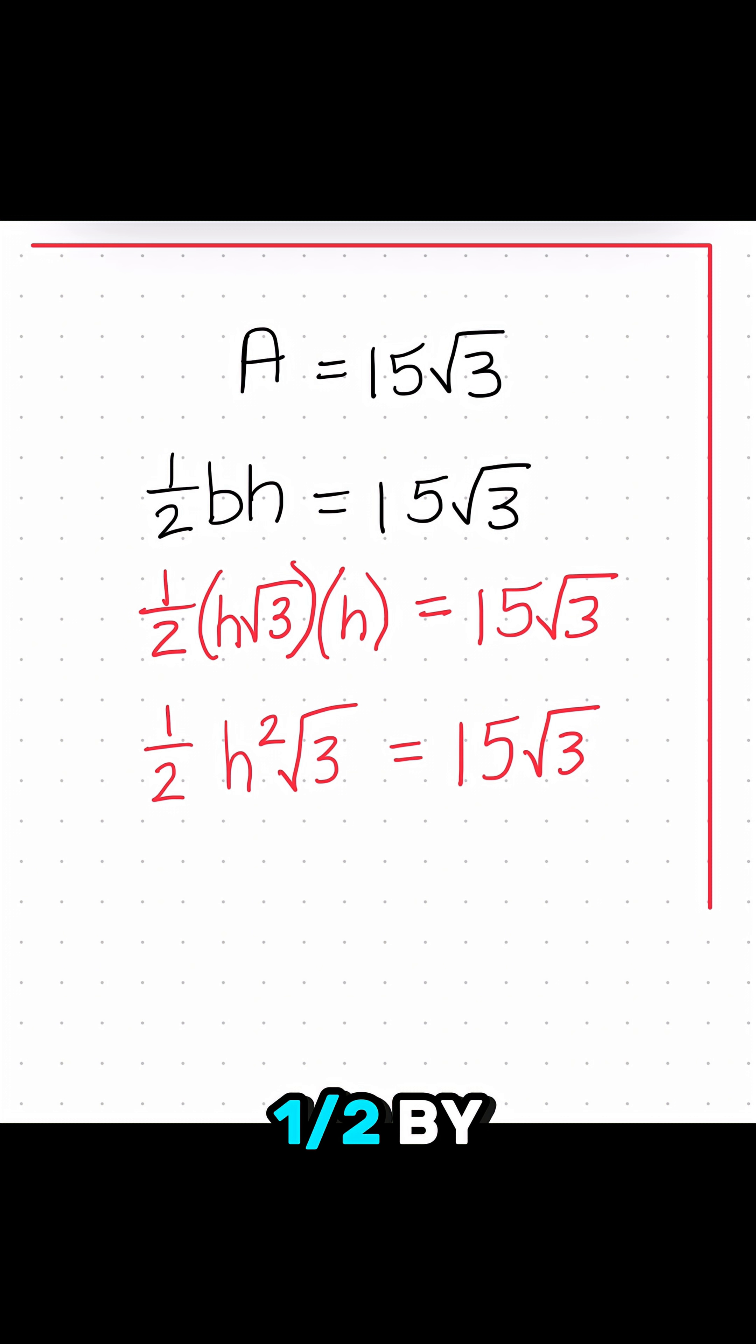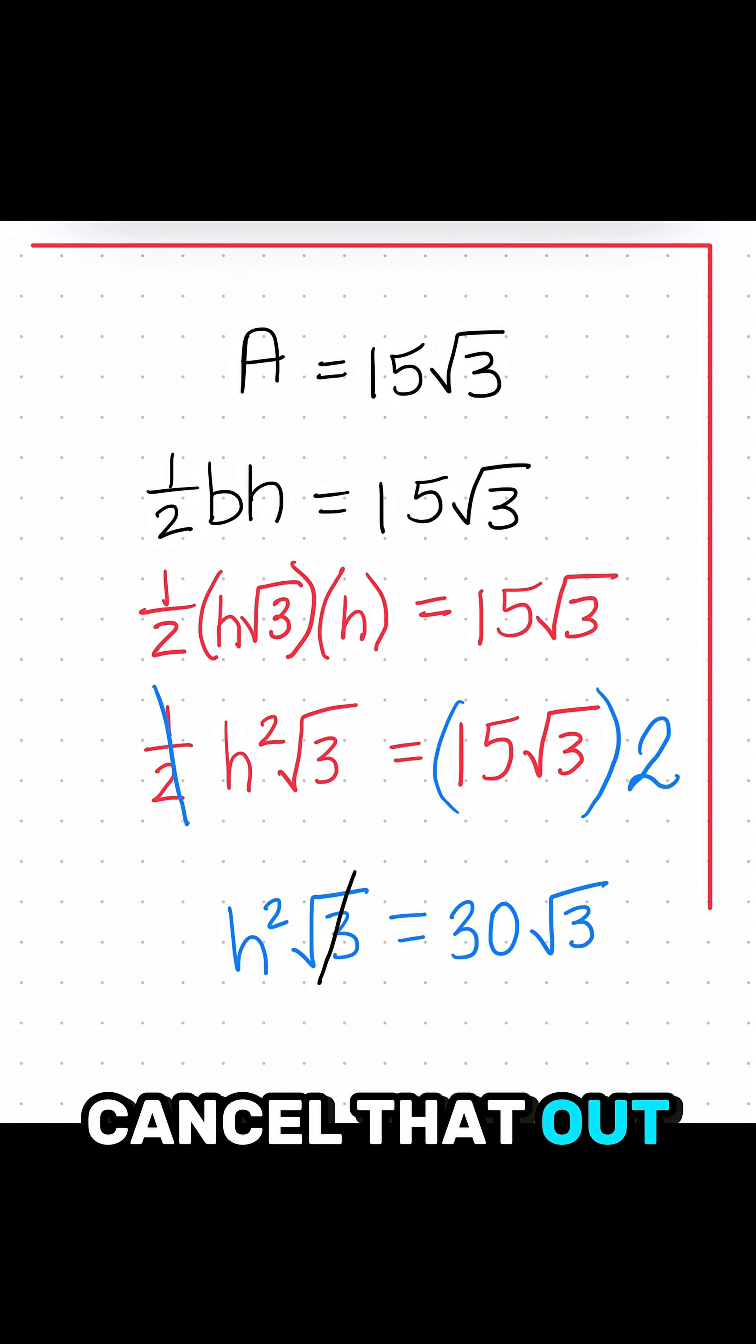I'm going to go ahead and get rid of this one half by either dividing by a half or multiplying by 2, which is the same thing. So I'm going to multiply the other side by 2, and that's going to cancel out the one half. So here, I'm going to get 30 radical 3 is equal to h squared radical 3. And I have radical 3 on both sides, so I can just cancel that out.